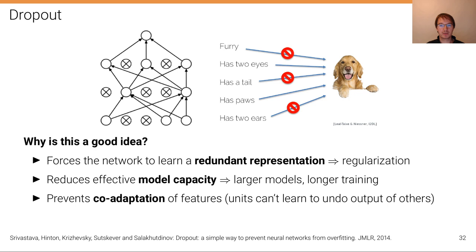One other aspect why this is a good idea—another intuition why this is a good idea—is that it prevents co-adaptation of features. In classical deep learning, as we've seen before, units can learn to undo the effect of other units. So you can create a zero value by having one unit responding highly and another one responding very low and then combining them.